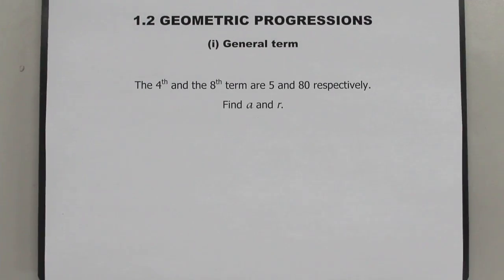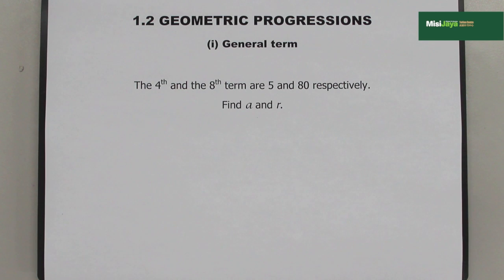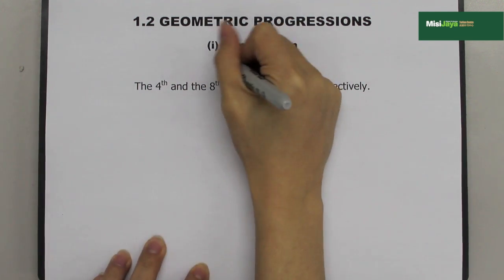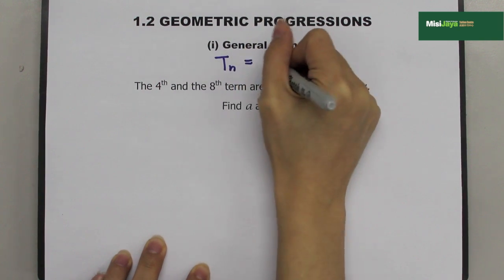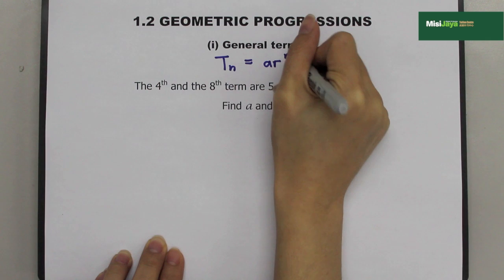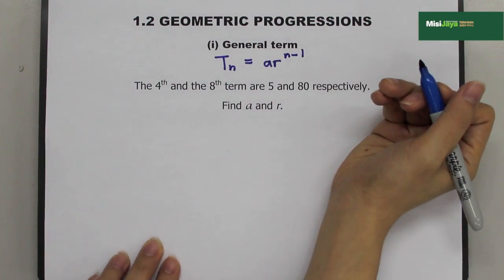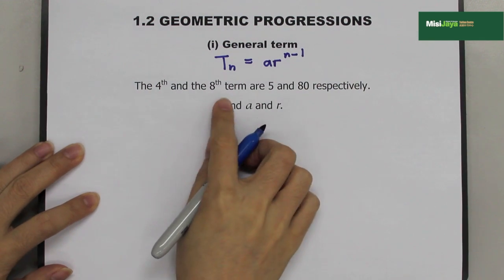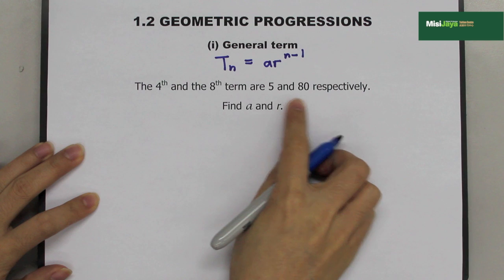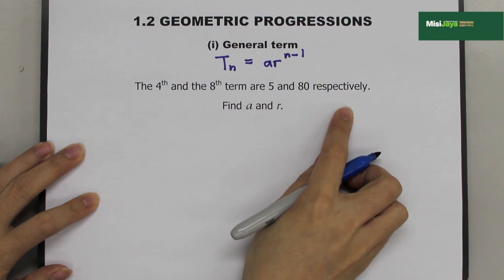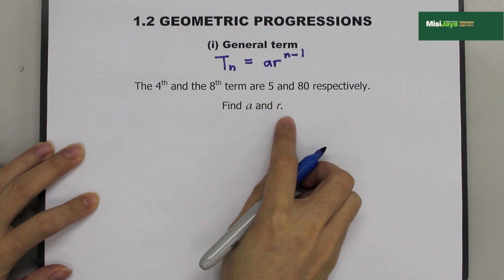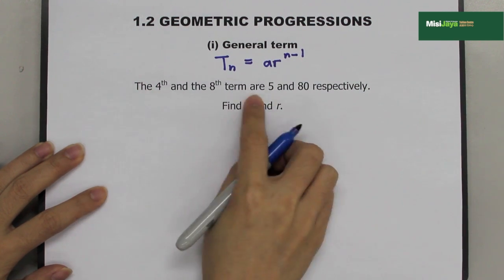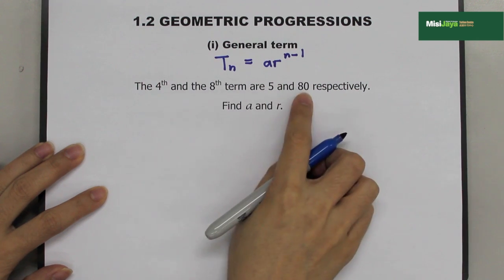The first formula to memorize for geometric progressions is TN equals A times R to the power N minus 1. Example: the fourth and the eighth terms are 5 and 80 respectively. Find A and R. So T4 equals 5 and T8 equals 80.